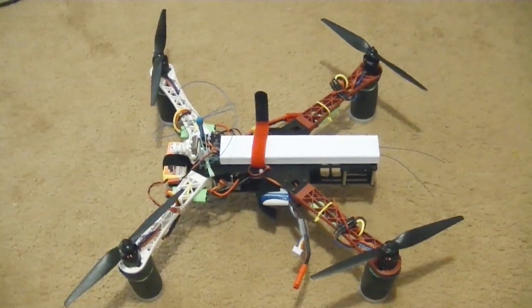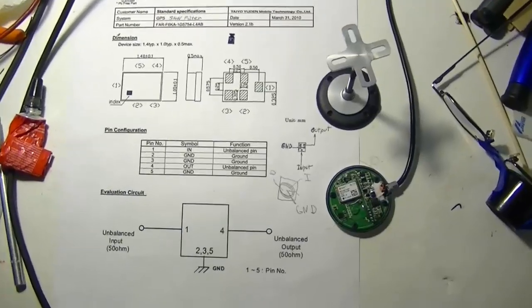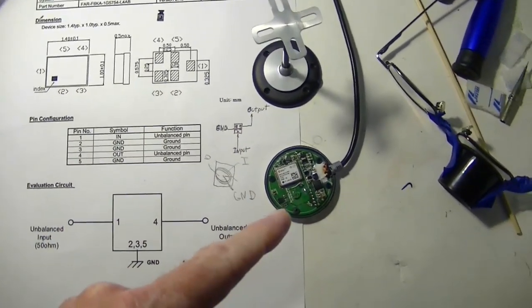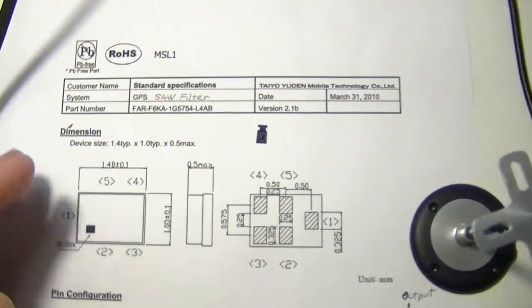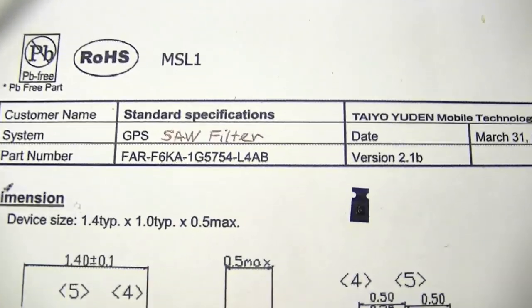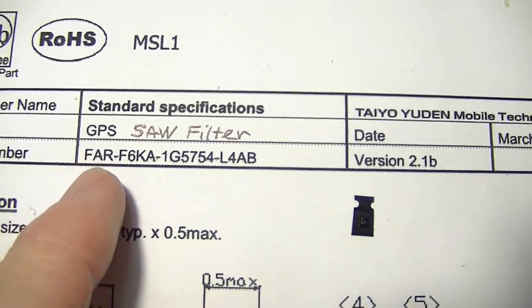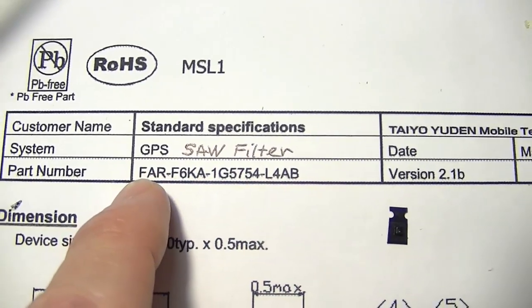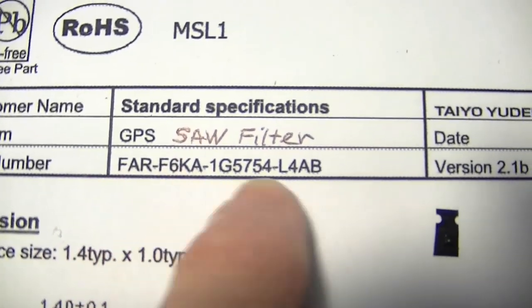So I've got my GPS apart here and we're going to put the SAW filter on it. The first thing to do is I had to order a SAW filter, and this was the part number I used. It came from DigiKey, so there's the number if you need it.